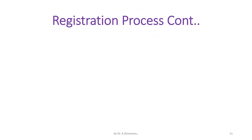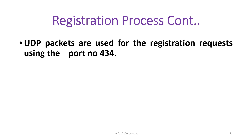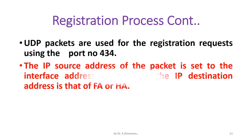UDP packets are used for the registration requests using port number 434. The IP source address of the packet is set to the interface address of the mobile node. The IP destination address is that of the foreign agent (FA) or home agent (HA).